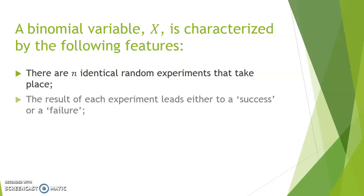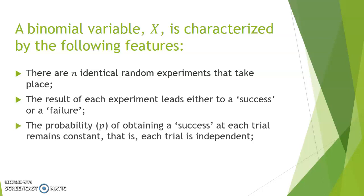The result of each trial will either lead to a success or to a failure. At every trial, the probability of a success remains constant and is called p. This ensures the independence of every trial. Finally, the variable itself consists of the total number of successes that you will have observed over the n trials.